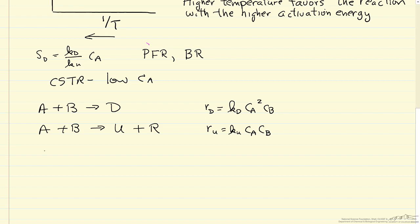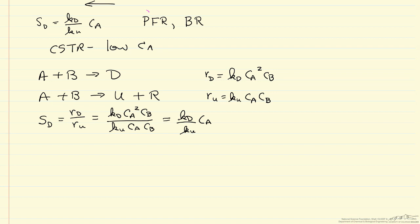If we now again look at our definition for instantaneous selectivity, that's the rate of desired over the rate of the undesired reaction. Let me make this substitution. We see the selectivity for the first reaction is first order in A and then dependent on concentration of B.